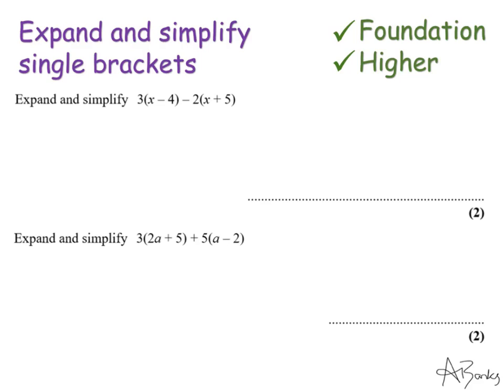Okay let's look at this first question. So the first thing I'm going to do is expand this first bracket. So I'm going to do 3 multiplied by x that's 3x and then I'm going to do the 3 multiplied by minus 4 which is minus 12.